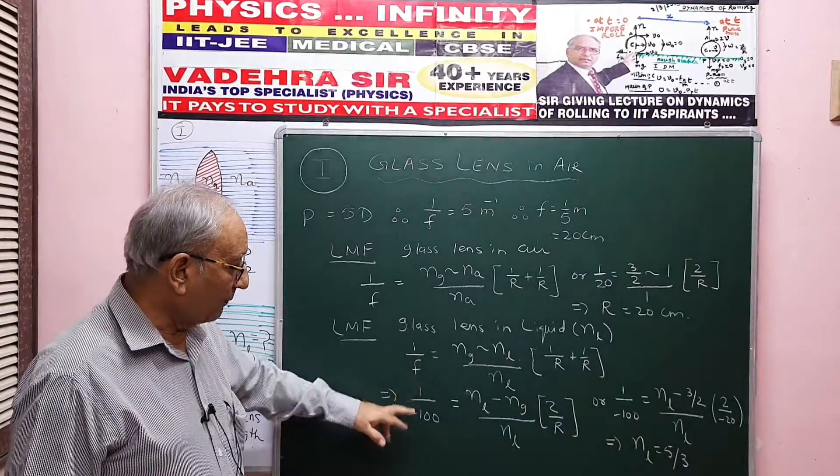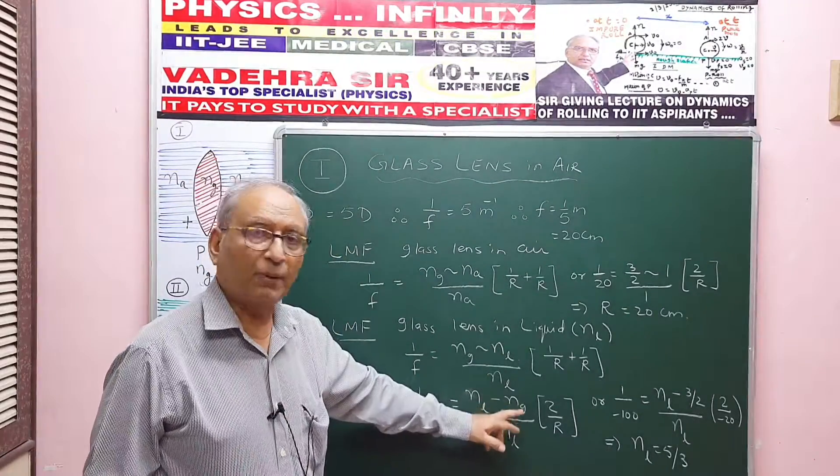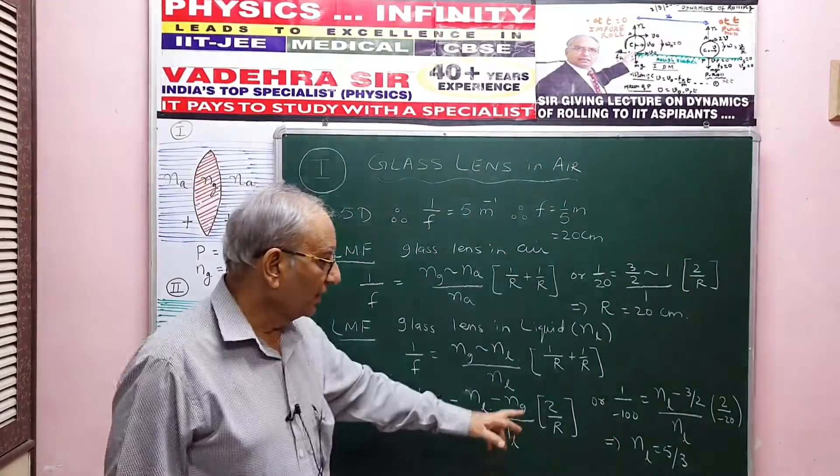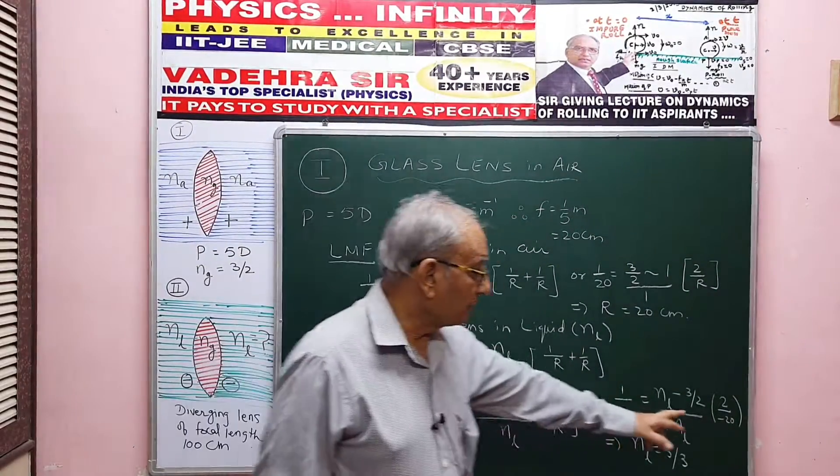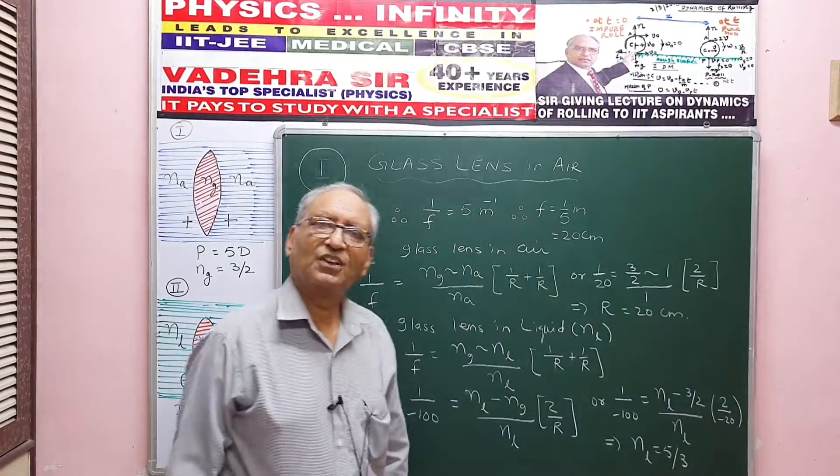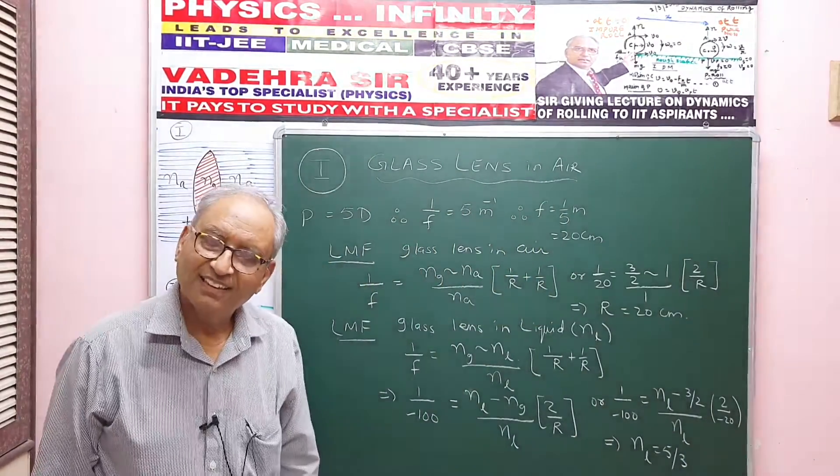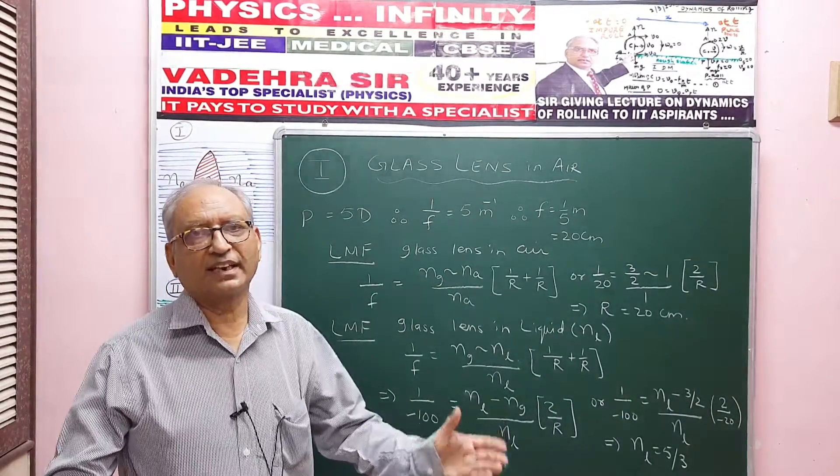So I put the values: 1 upon minus 100 is NL minus NG upon the medium, that is NL, into 2 by R. Of course I place R now as minus 20. I solve, I get NL equal to 5 by 3. So there you are, that's the solution to this problem.